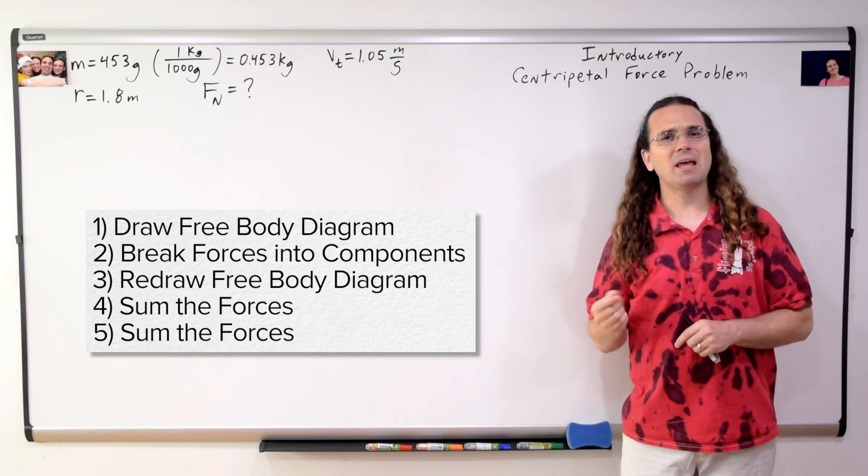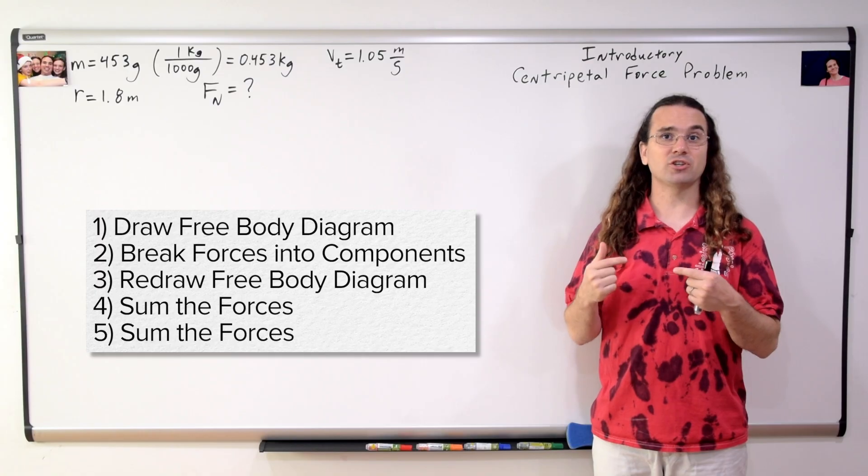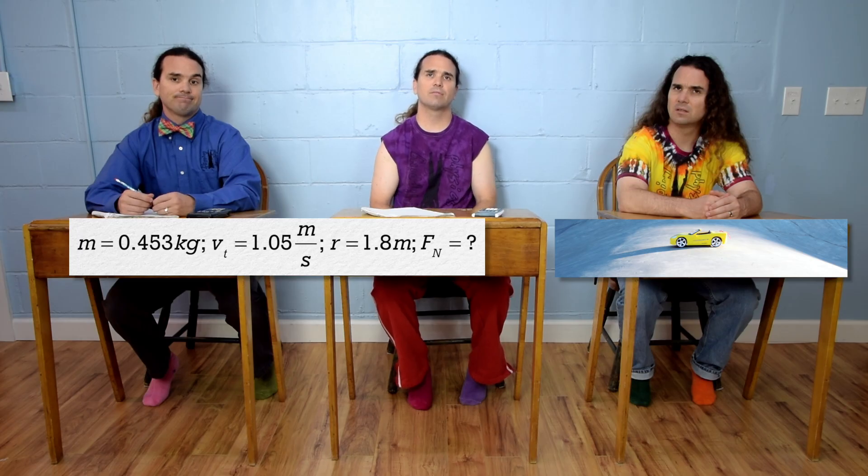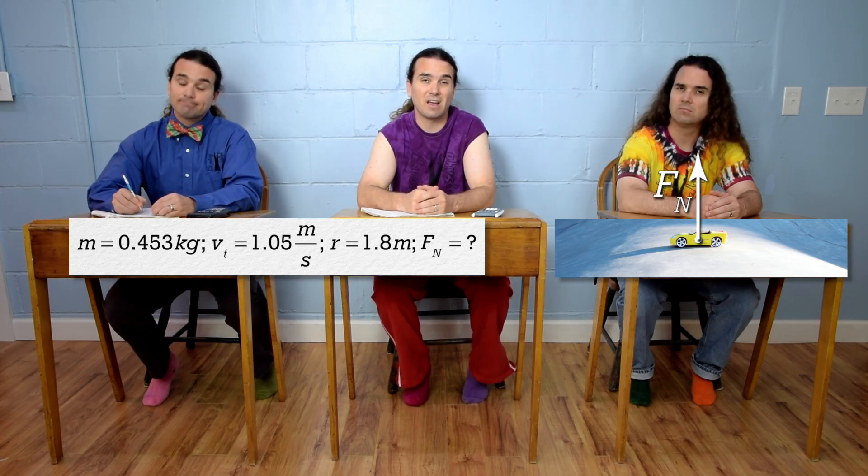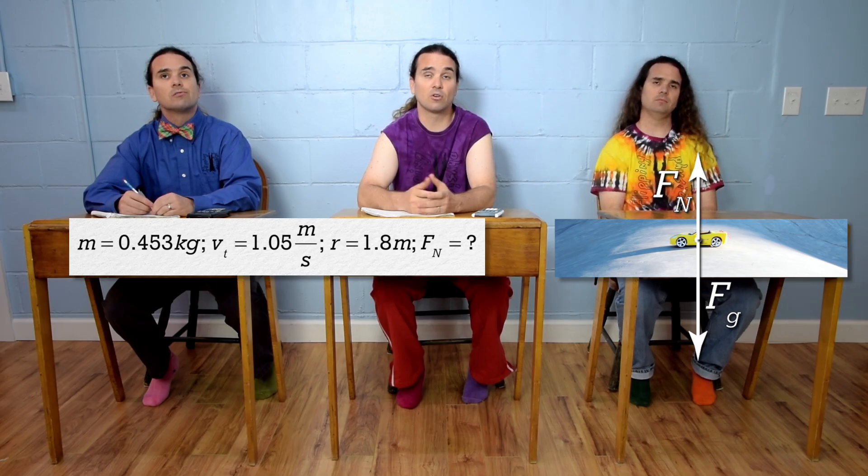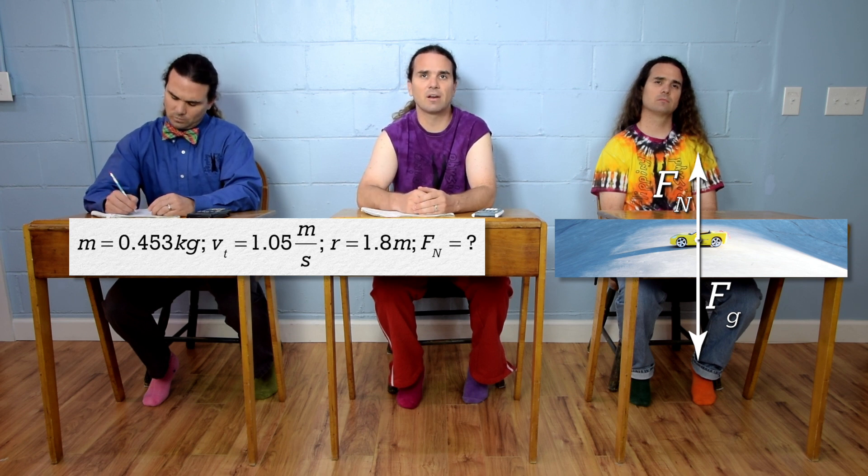And step 5... Sum the forces again. Correct. Remember, step 5 is to sum the forces in a direction perpendicular to the direction in step 4. Bobby, please begin. The force normal is up and the force of gravity is down. That's it. So, there are no forces to break into components. So, we can skip doing that and we can skip redrawing the free body diagram.